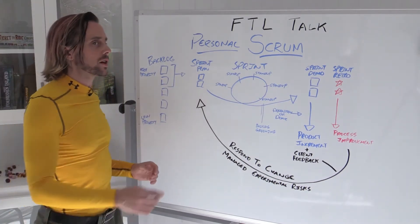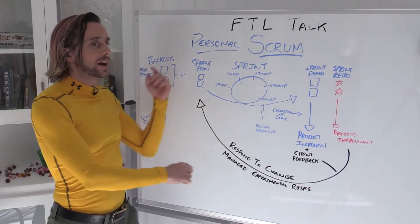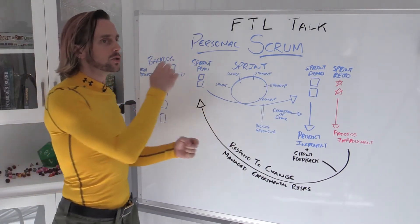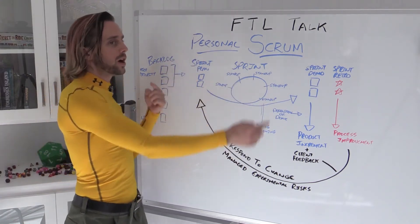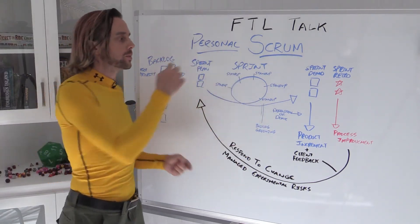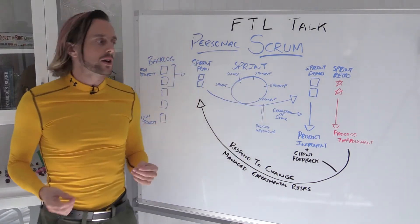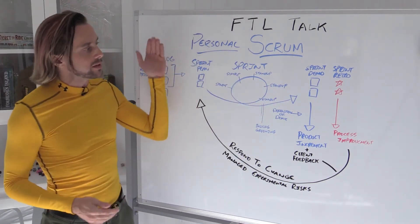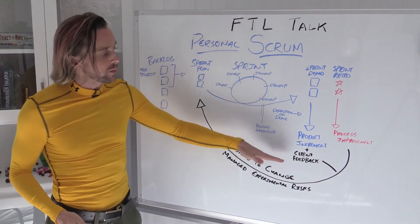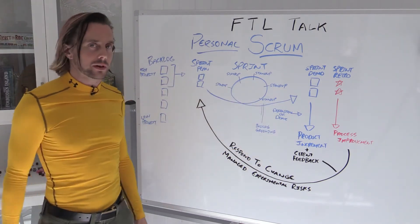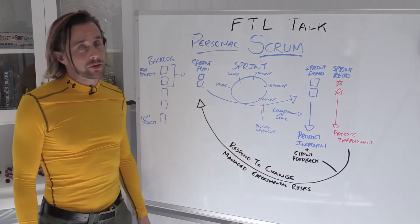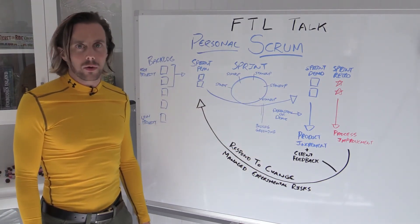What this is going to do is create a feedback loop that allows you to continually improve not only your process but also your product. You're going to keep building things that only someone actually wants. That's really important in software — people don't like stuff they don't want.